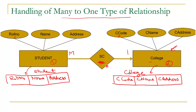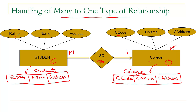The next task is to handle the relationship between Student and College. Since the relationship type is many-to-one, we need to capture this relationship by linking student information with college — in simple words, linking row number with college code. We will evaluate two possible strategies and identify the best one.